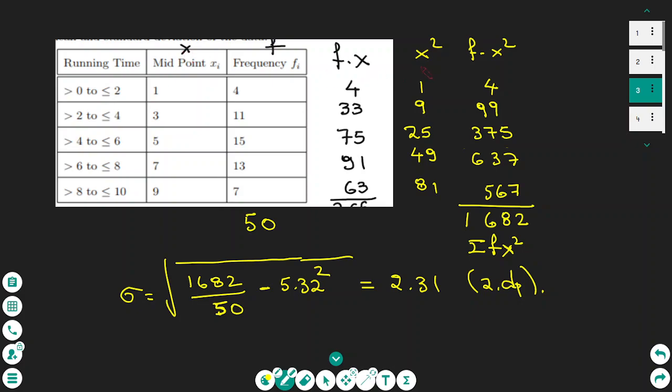This gives me the numbers 1, 9, 25, 49, 81. The other column next is F times X squared.